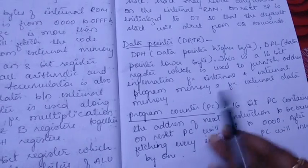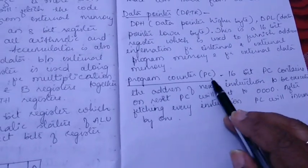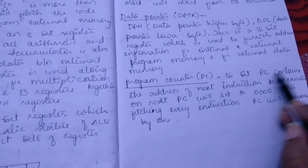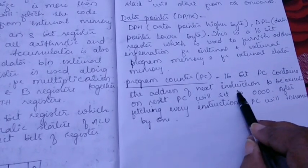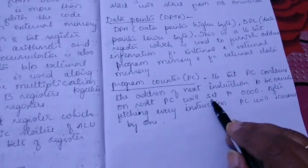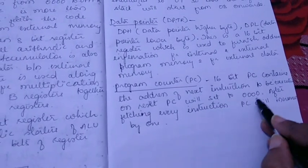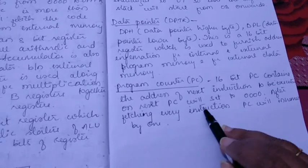Next, program counter which is also 16-bit. Program counter contains the address of next instruction to be executed. On reset, program counter will set to 0000, and after fetching every instruction program counter will be incremented by 1.